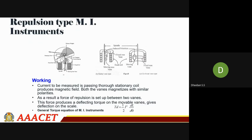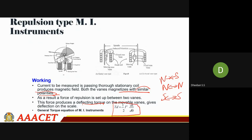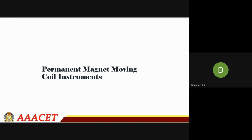After passing the current to be measured, both vanes get magnetized with similar polarities — this is the important criteria. When polarities are similar, like north-north or south-south, they repel each other. Due to this repulsion force, the pointer gets moved, producing a deflecting torque. This deflecting torque is given by the equation: Td = ½ I² · dL/dθ, where θ is the deflection angle.